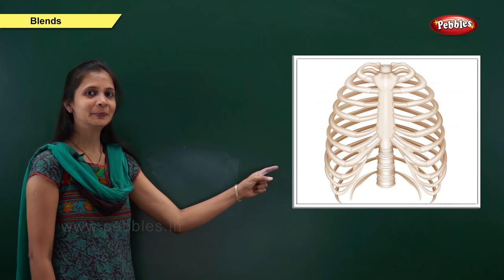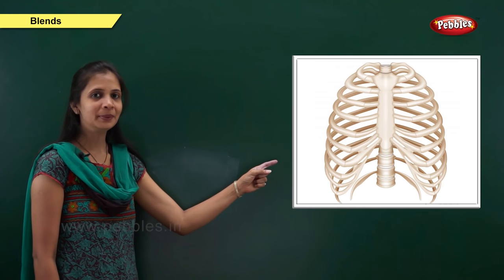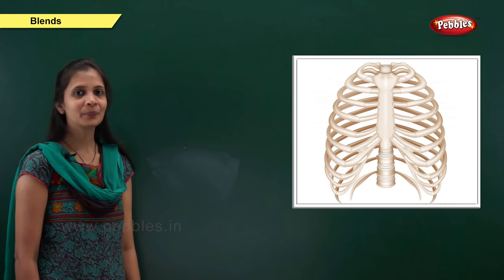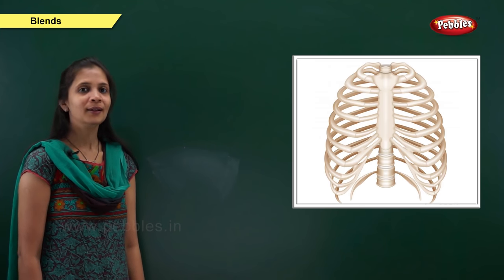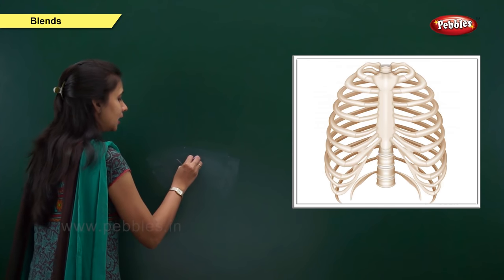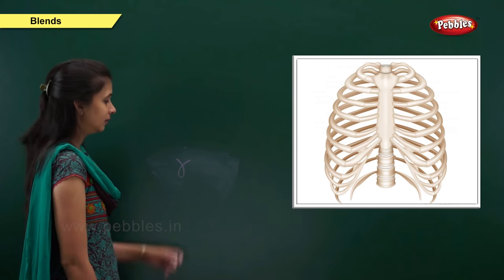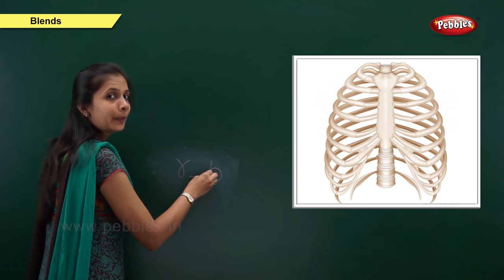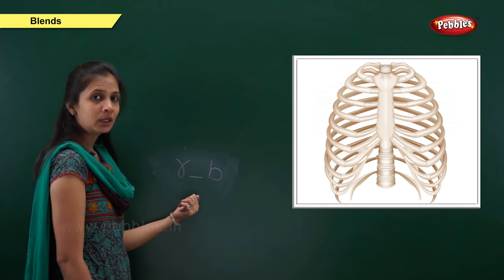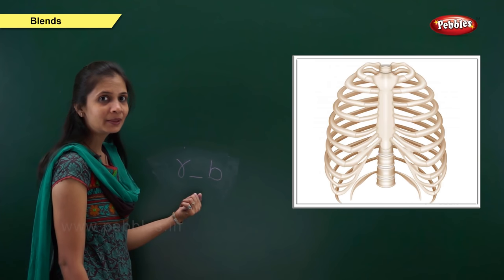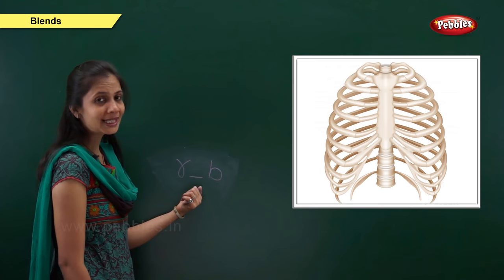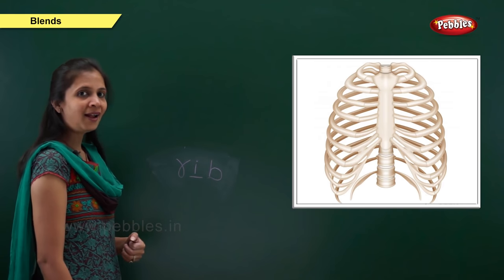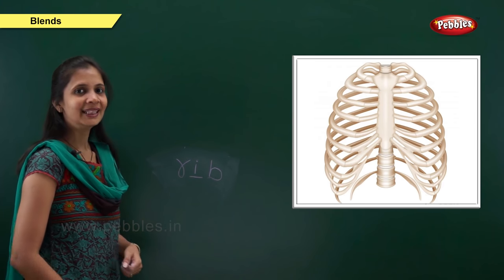Next one. Which picture is this? It is rib. What is the sound of this word? It is r, e, b. When the sound is 'r', the letter is r. When the sound is 'b', the letter is b. The middle vowel — when the sound is 'e', the vowel is i. So: r, i, b — rib.